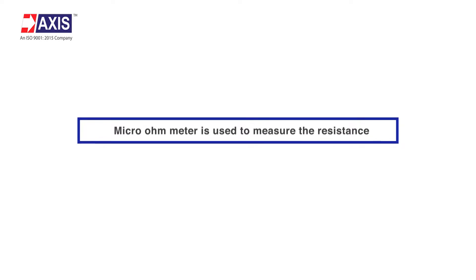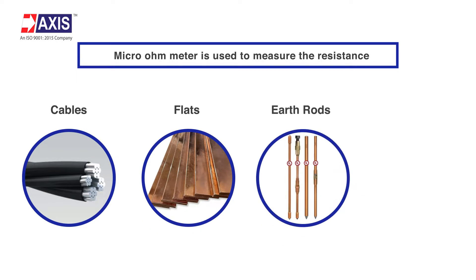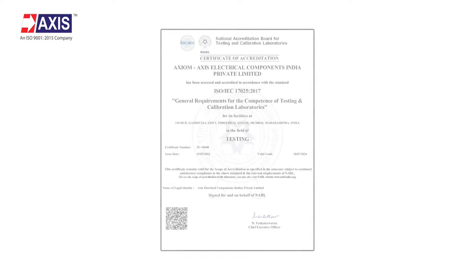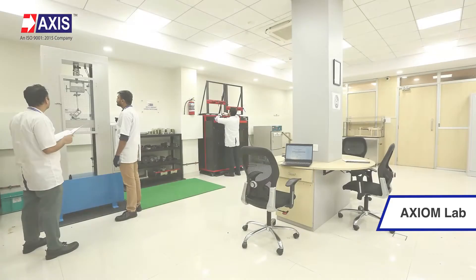A micro ohm meter is used to measure the resistance of low resistance items such as cables, flats, earth rods, and joints. This test at our NABL accredited Axiom Lab employs the four-wire method to measure the resistance.